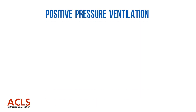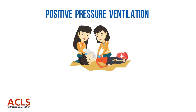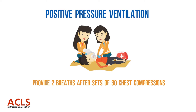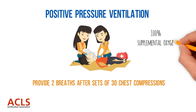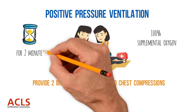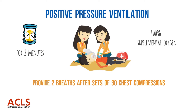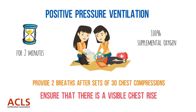For positive pressure ventilation, when using a bag valve mask device or other barrier device, provide two breaths after sets of 30 chest compressions and provide 100% supplemental oxygen. This is performed for two minutes. During this time, always ensure that high-quality CPR is provided. Make adjustments as needed — ensure that compression depth, full chest recoil, and compression rate are being followed. When providing ventilations, ensure that there is a visible chest rise as each breath is given, which is an indication that adequate ventilations are being delivered.